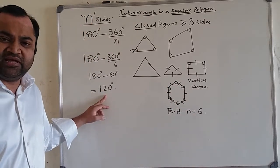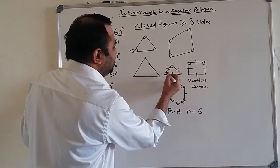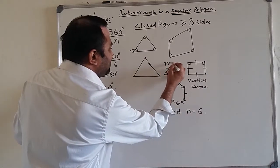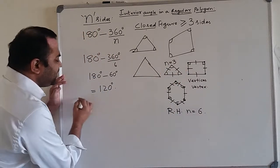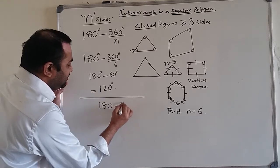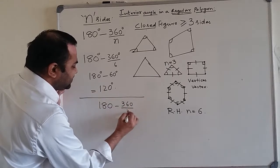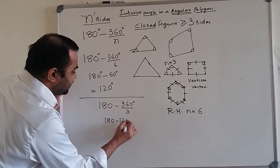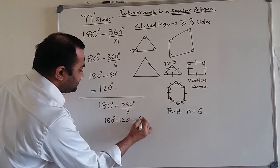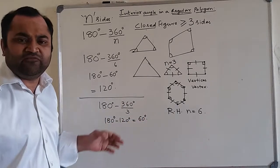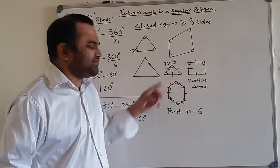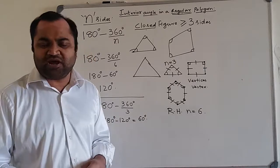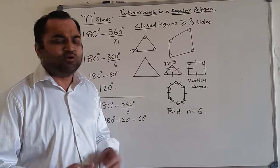Similarly, the measure of each interior angle in an equilateral triangle, where the number of sides n = 3, is: 180 minus 360 divided by 3, which is 180 minus 120, equal to 60 degrees. This is a well-known fact — the three angles in an equilateral triangle are equal and each measures 60 degrees.